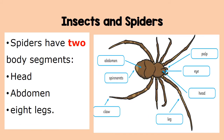While insects have three body segments, spiders on the other hand only have two: the head and the abdomen. Spiders have eight legs while insects have six legs.